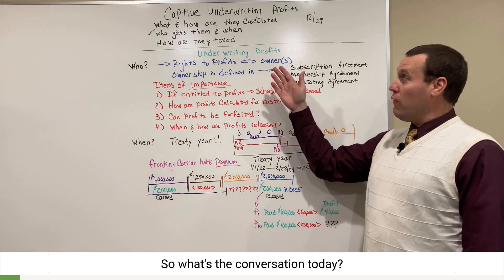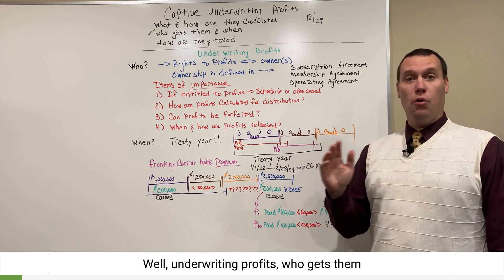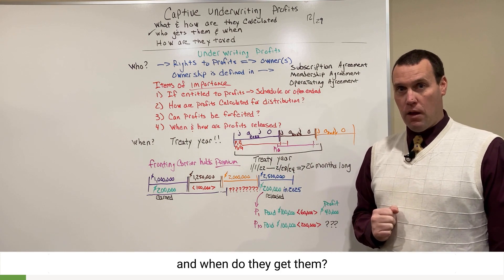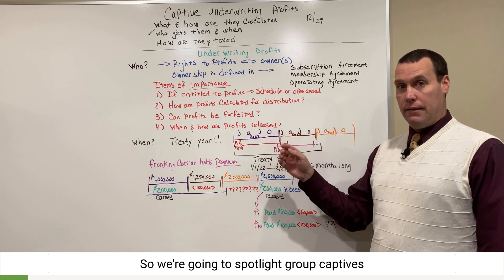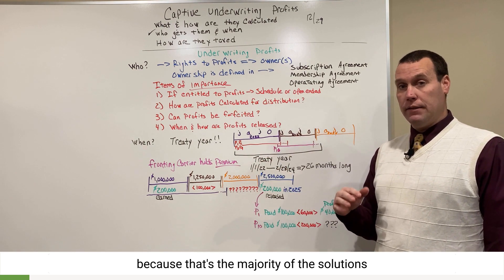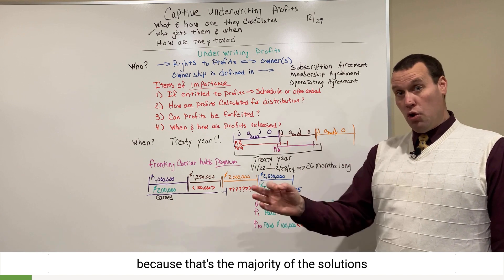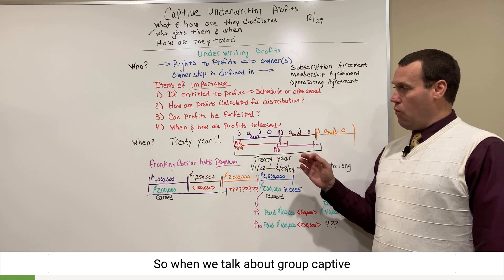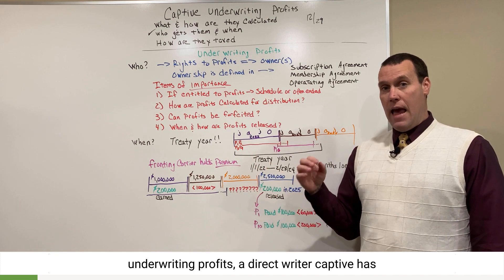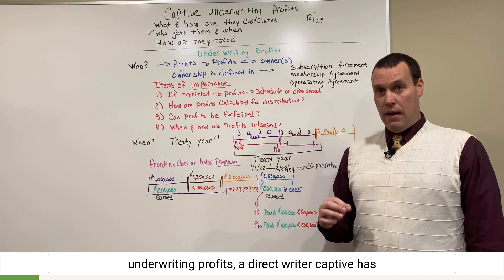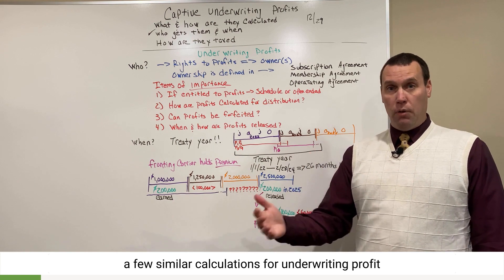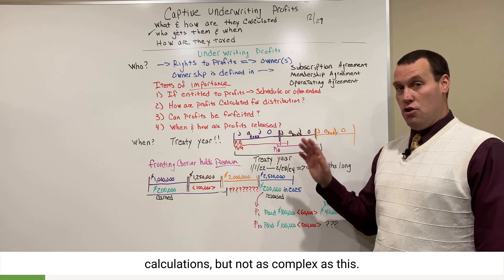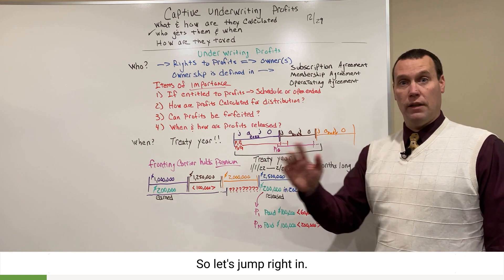So what's the conversation today? Well, underwriting profits — who gets them and when do they get them? We're going to spotlight group captives because that's the majority of the solutions that are out on the market today. A direct writer captive has a few similar calculations for underwriting profit, but not as complex as this. So let's jump right in.